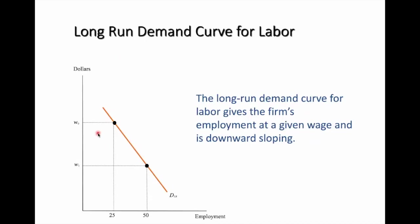This is the shape of the long-run demand for labor. It is a downward sloping demand curve where the vertical axis measures the wage rate and the horizontal axis measures the level of employment. It shows a negative relationship between wage rate and the level of employment.